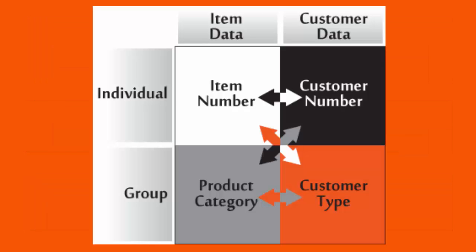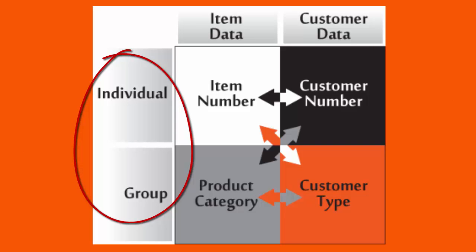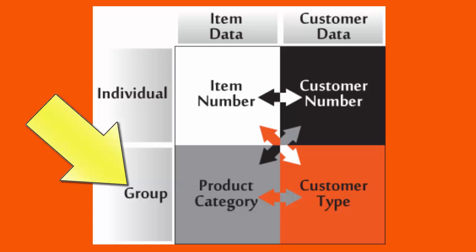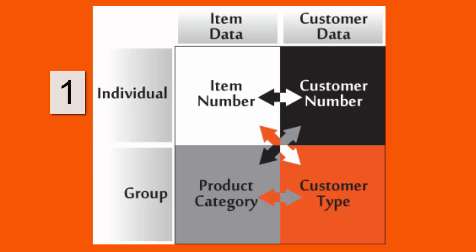If we return to our table, we notice that our table has two rows. The first row is labeled Individual, and the second is labeled Group. On the individual row, the price relates to one item number or one customer number — we are dealing with one. On the group row, the price relates to a group of items, product category, or a group of customers, customer type. This explains the overall setup of the table.